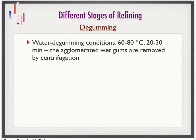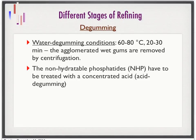For water degumming, the conditions are: temperature between 60 to 80 degrees Celsius and time between 20 to 30 minutes. The wet gums formed can be removed by centrifugation. Water degumming is used when the crude oil contains a high amount of hydratable phosphatides. But if the oil contains non-hydratable phosphatides, we have to use concentrated acid to remove them.